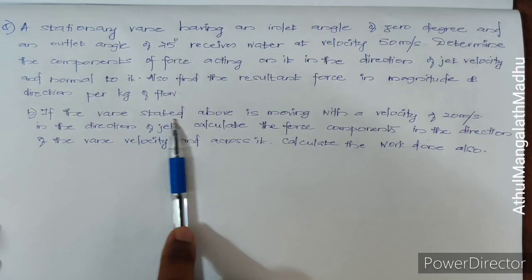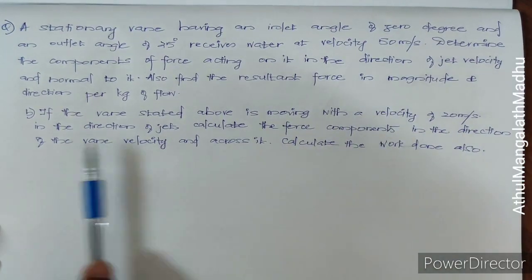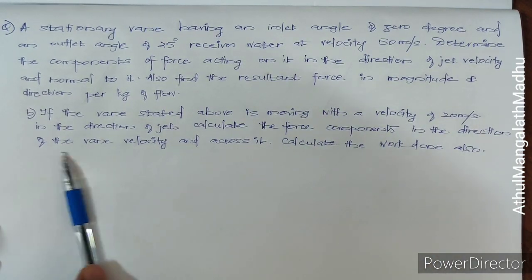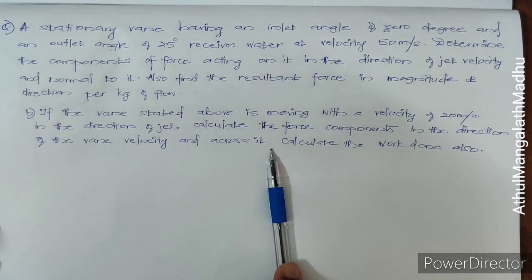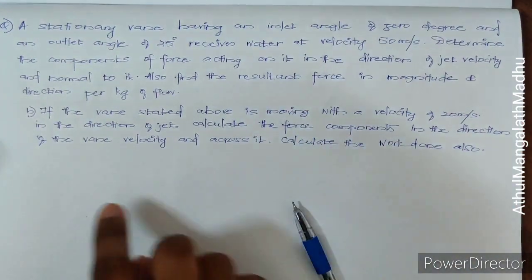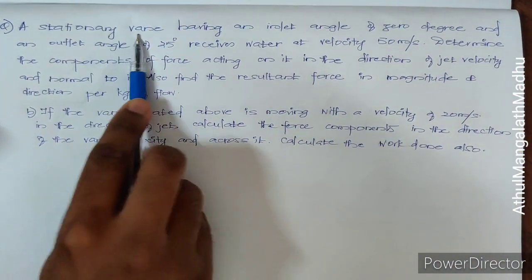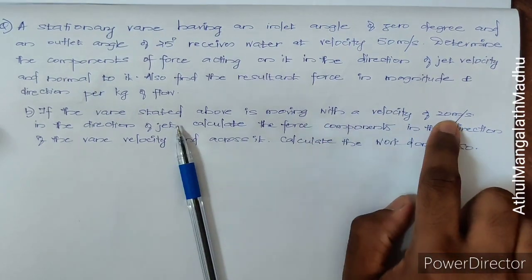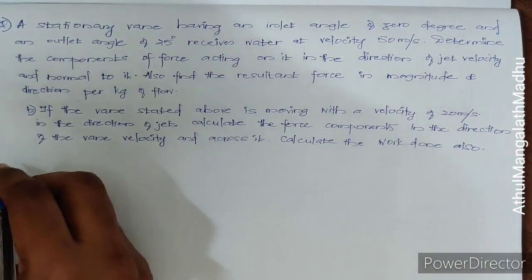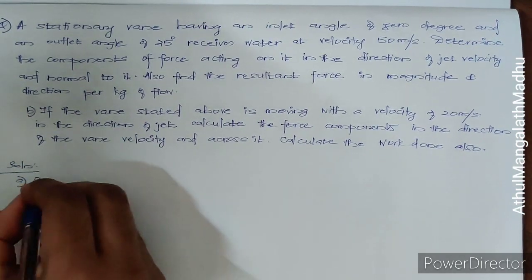Second question: if the vane stated above is moving with a velocity of 20 meter per second in the direction of the jet, calculate the force components in the direction of vane velocity and across it. So you have two questions. In the first case you have a curved vane but it is stationary. In the second case it is moving with a velocity of 20 meter per second.